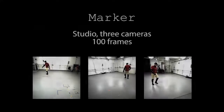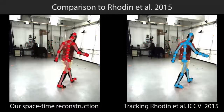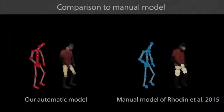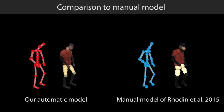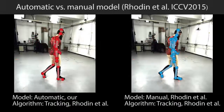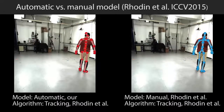Here we qualitatively compare our pose and shape estimation results to the tracking approach of Rodina and colleagues. While overall accuracy is comparable, our approach does not require any manual interaction. Our automatic initialization closely matches the handcrafted model used by Rodina and colleagues. Existing tracking approaches can benefit from our automatic model initialization.